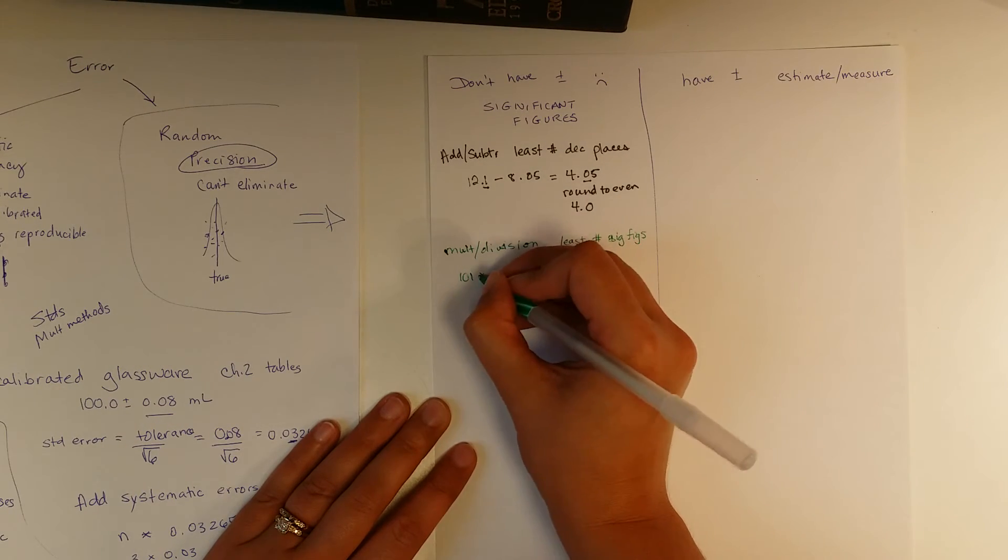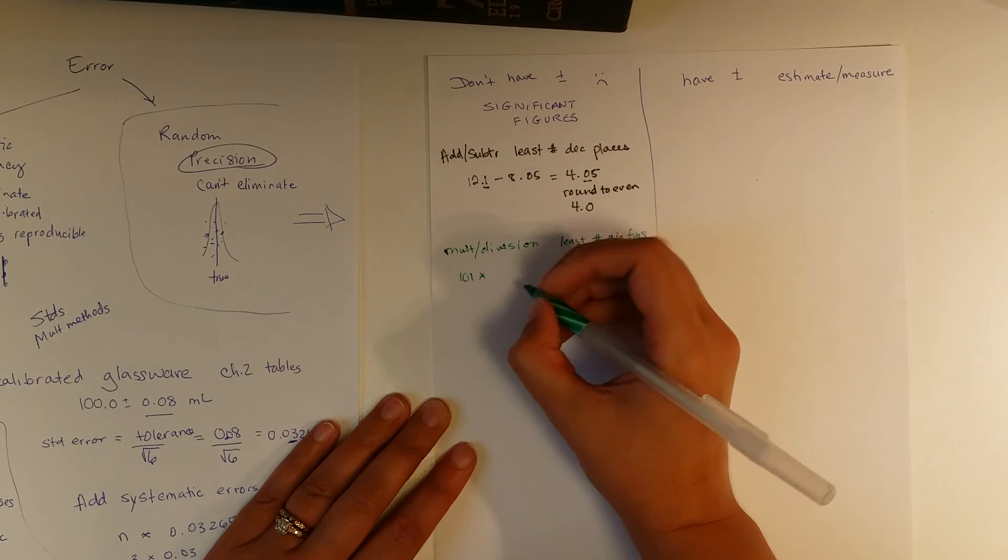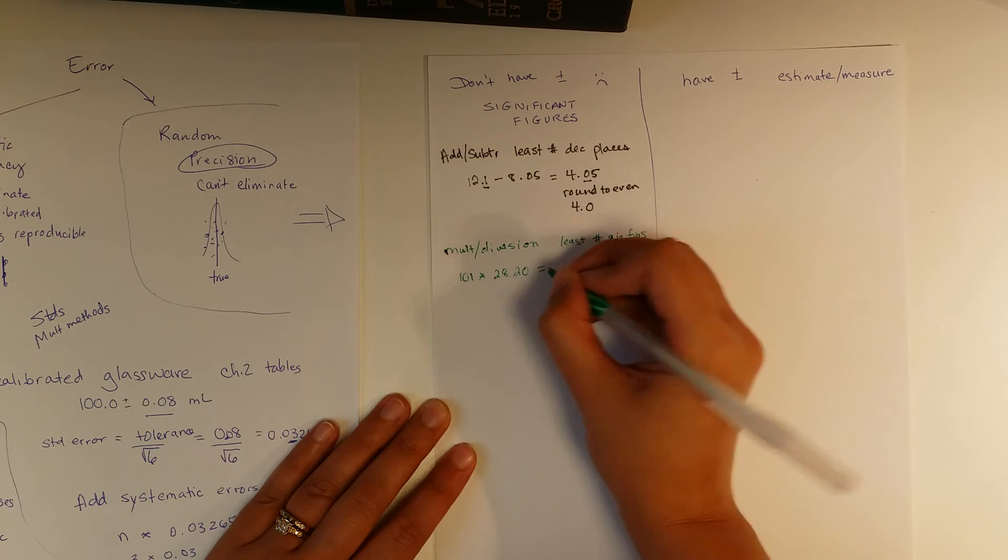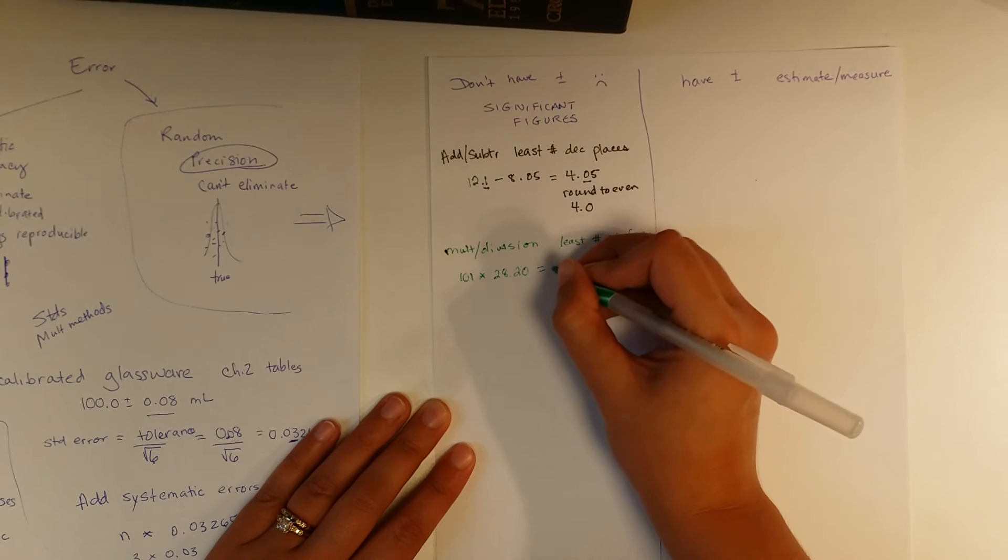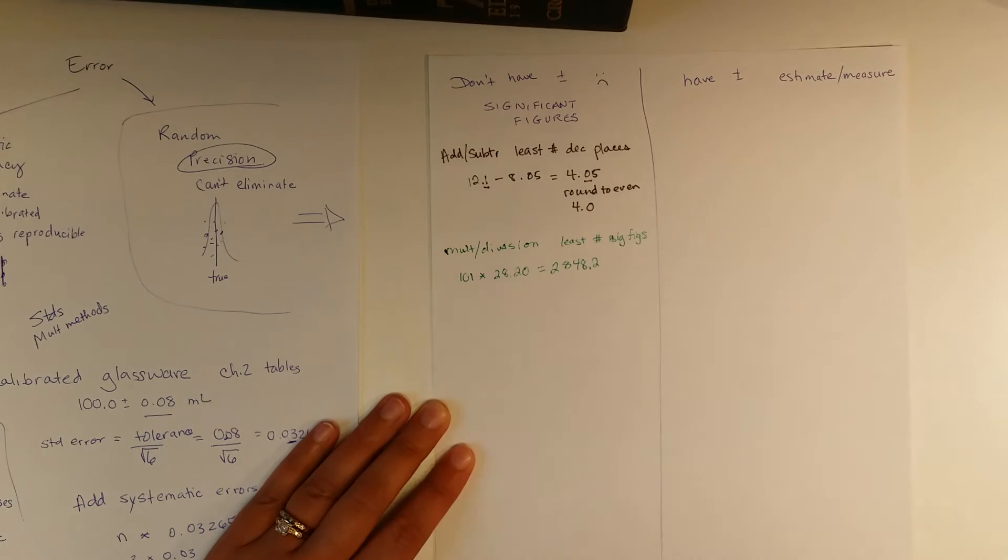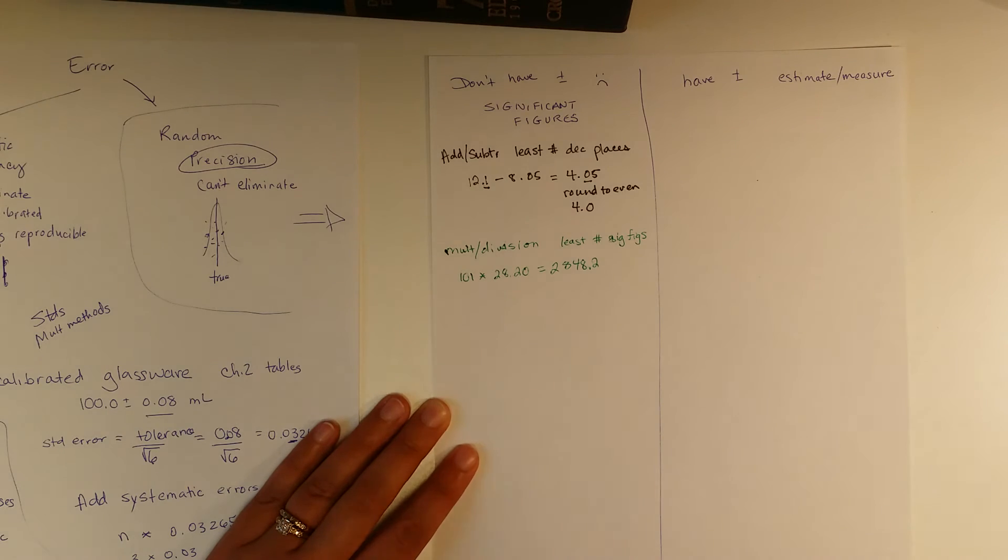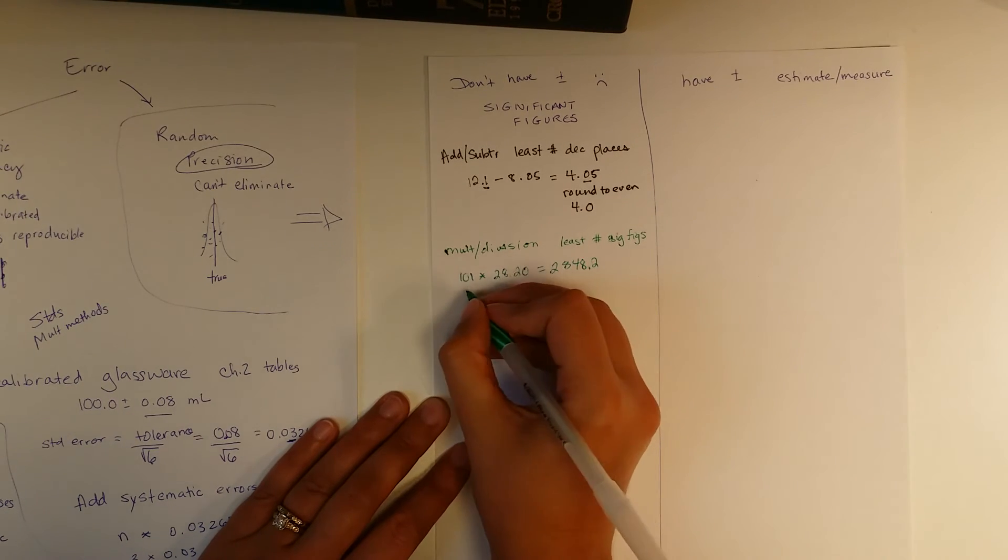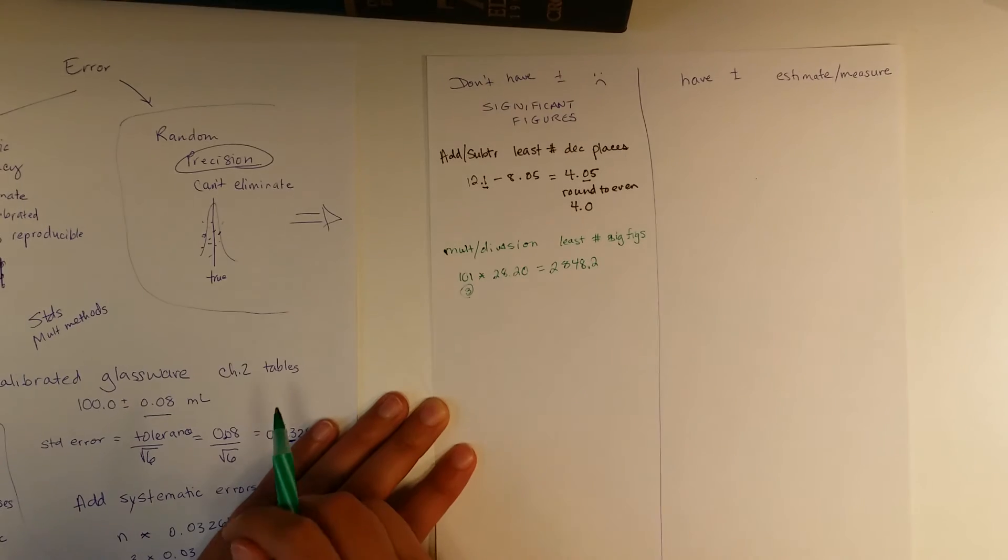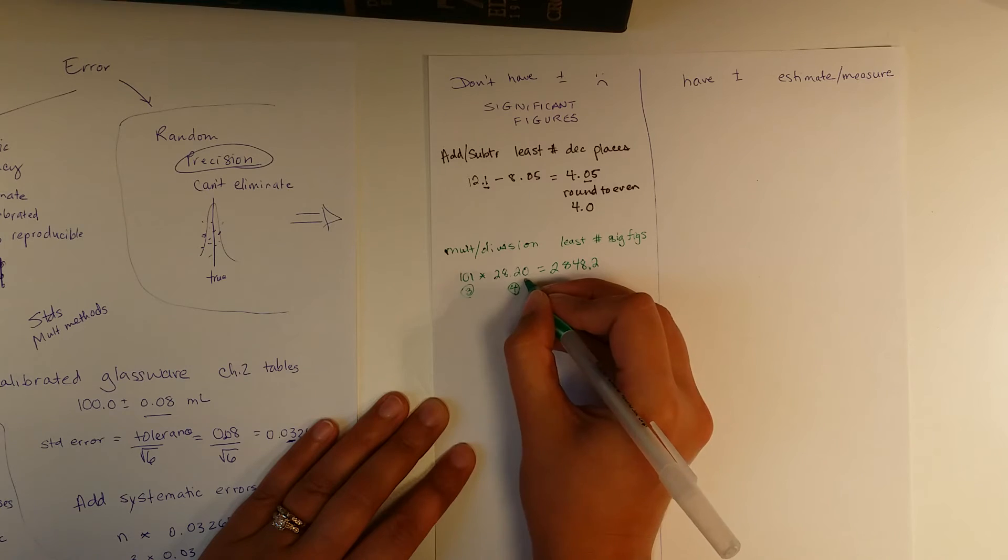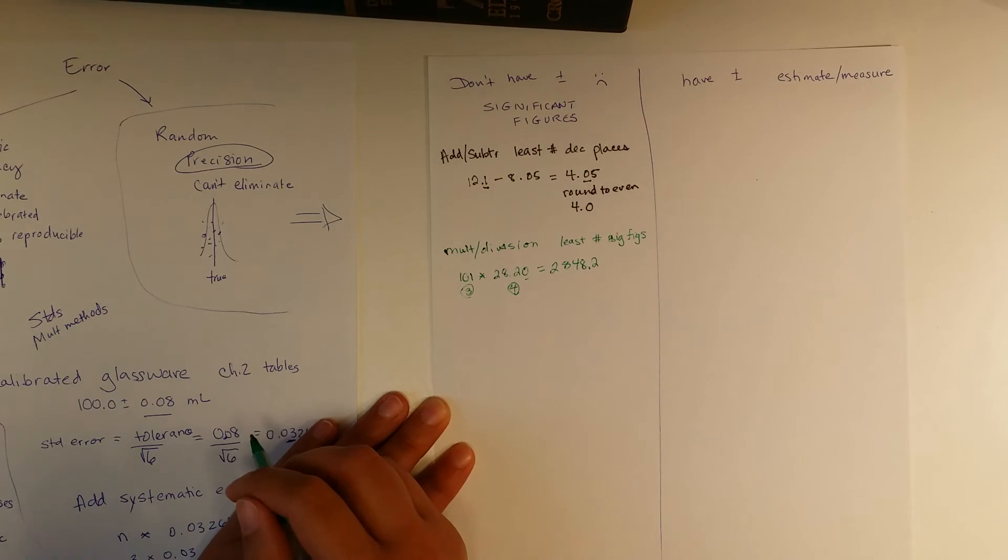Example here is, let's say that we have 101 times, I don't know, 28.20. And we put that in our calculators, and it comes out to 2848.2. How do we know how many sig figs to round those two? Well, we count. There are three sig figs here. Zero is in between the numbers, and so that's significant. And there are four sig figs here. This zero is off to the right-hand side, so that is also significant.